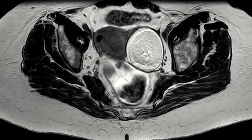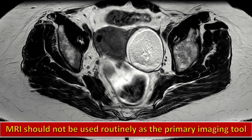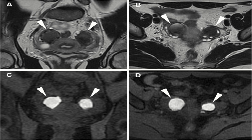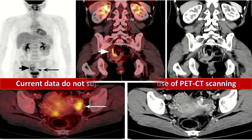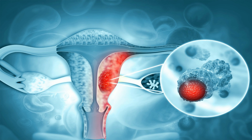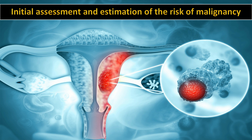MRI should not be used routinely as a primary imaging tool for initial assessment of ovarian cysts in postmenopausal women. MRI should be used as a second-line imaging modality for characterization of indeterminate ovarian cysts when ultrasound is inconclusive. Current data do not support the routine use of PET-CT scanning in initial assessment of postmenopausal ovarian cysts, as data suggest there is no clear advantage over transvaginal ultrasonography.